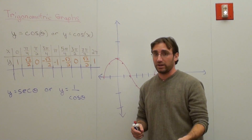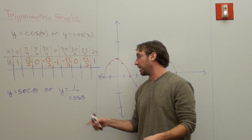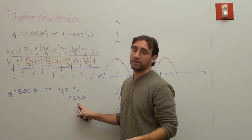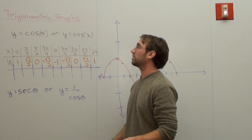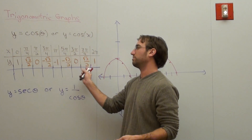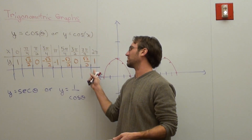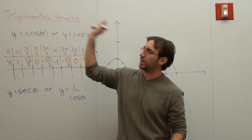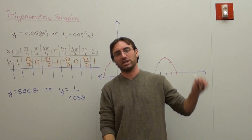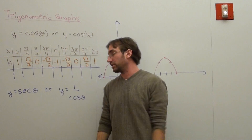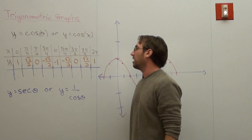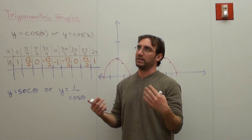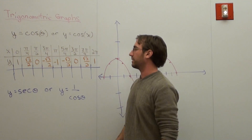We're going to be doing the secant of theta right now, which is basically y equals 1 over the cosine of theta. What I did was I made myself a basic table from 0 to pi. You can continue going in either direction, but basically what you have to realize is that it's going to be periodic.